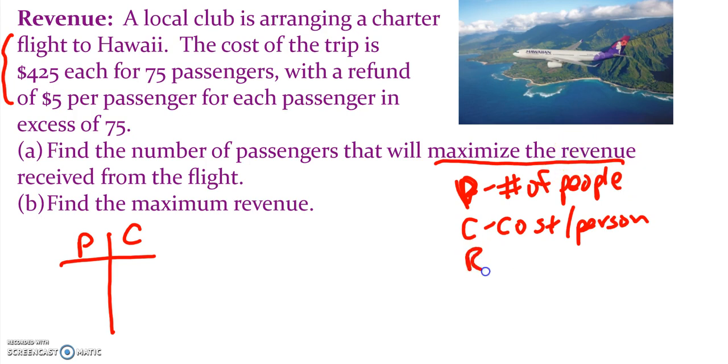And we're talking about revenue, and we'll get to that in just a minute. But we'll let R stand for revenue. So P is number of people. In the first case, if we have 75 people, our cost is going to be $425 per person. If we go to 76, now it decreases. We get a refund, so it decreases by 5, so it would go down to $420. Every time we increase by 1, we decrease by 5.